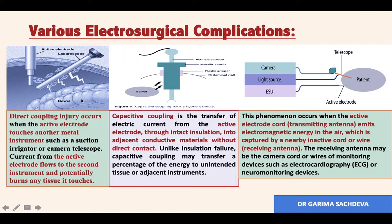The first complication is direct coupling. In this, there is an active electrode which touches another metal instrument, and when this metal instrument comes in direct contact with any luminal structures, any viscera, or the skin, it causes a burn. Direct coupling injury occurs when the active electrode touches another metal instrument — could be suction, irrigator, or a camera telescope — and current from the active electrode is transferred to the second instrument, potentially causing burns to the viscera or tissue it touches.